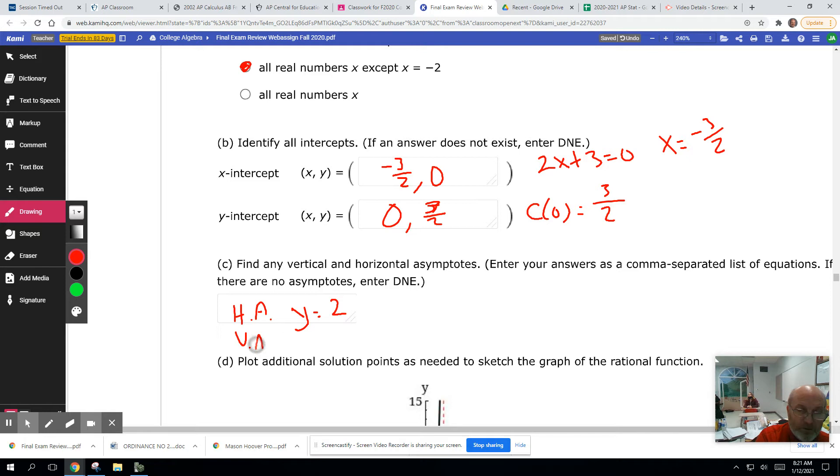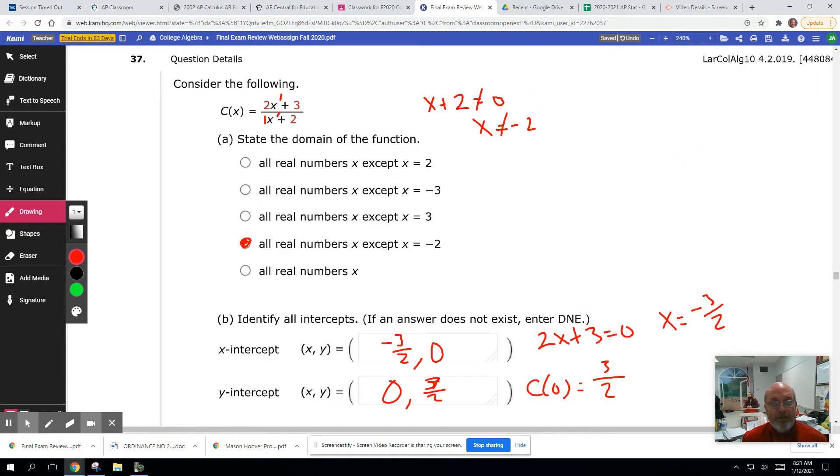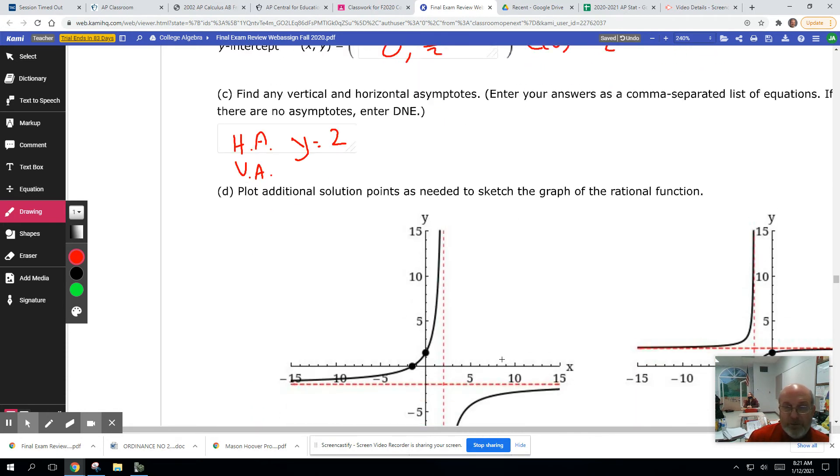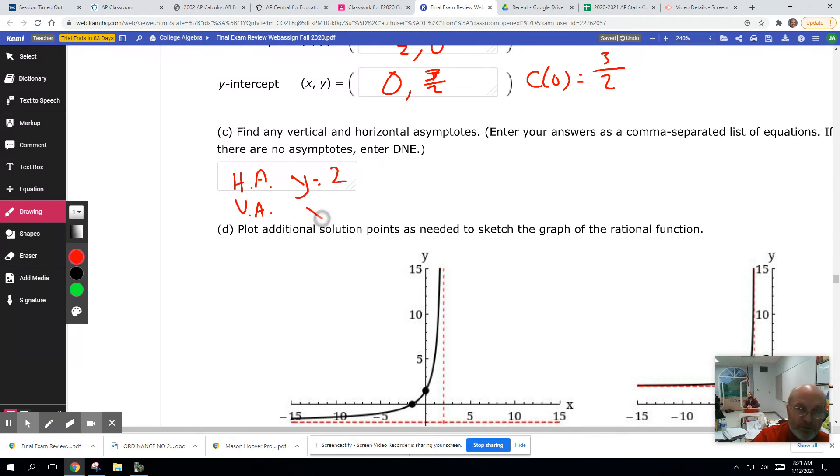The vertical asymptote is going to come from when the denominator is zero, but not the numerator. So again, x plus 2, you set it equal zero and solve. You get x equals negative 2. It's going to be our vertical asymptote.